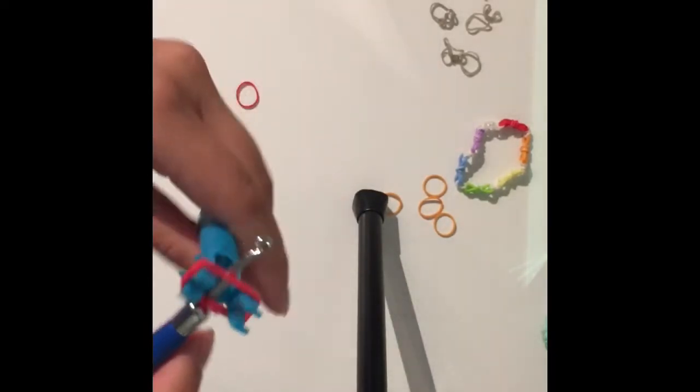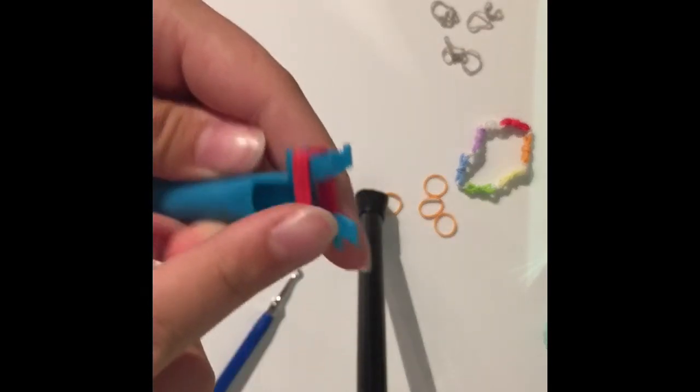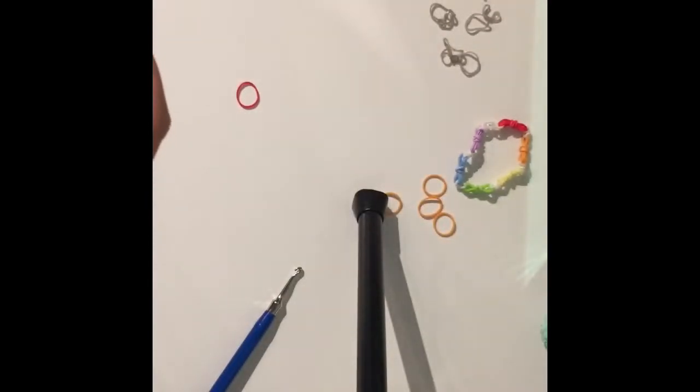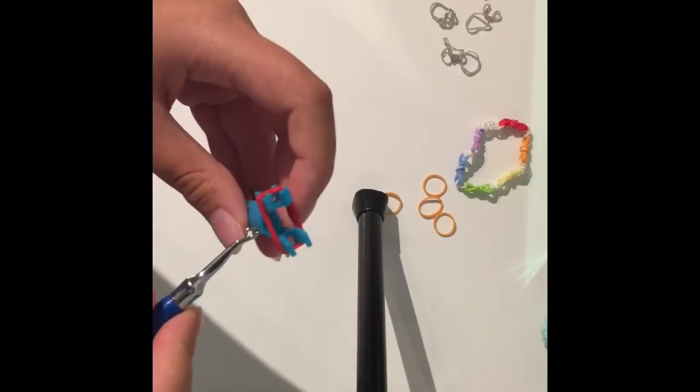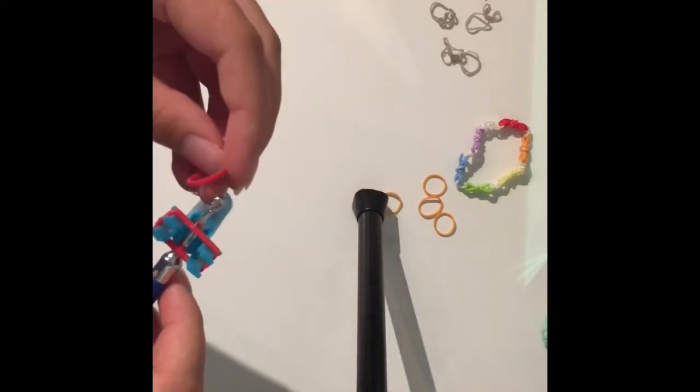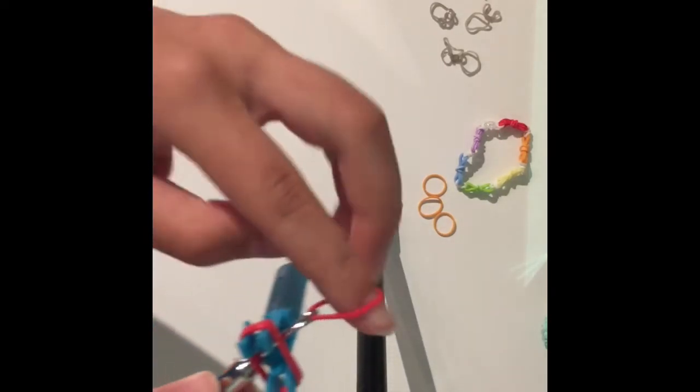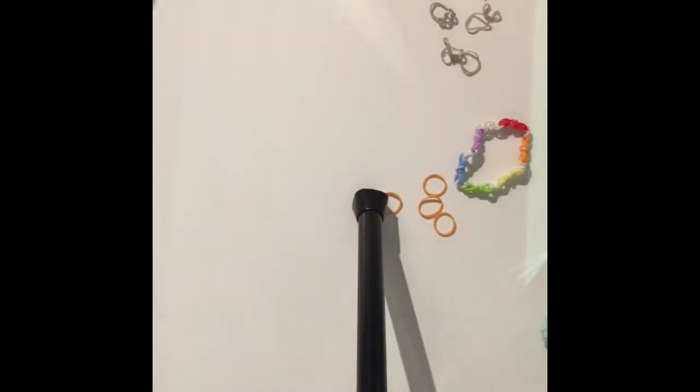So you're gonna put three bands on your two pegs of your loom or your finger loom or whatever you're using. And then you're gonna stick your hook underneath and pull a band through and slip knot it.